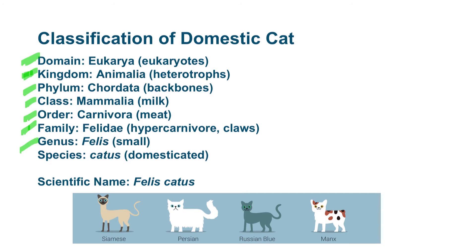They're in the genus Felis, which includes the smaller cat species. And they're in the species catus, which is the name we give to the domestic cat. So the scientific name for the domestic cat is Felis catus.